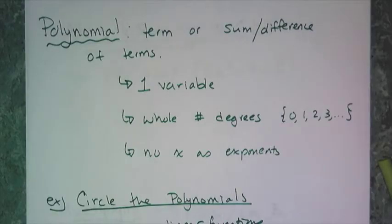Now this is the actual definition of a polynomial. It is a term, or the sum and differences of terms, specifically terms in a single variable, with whole number degrees, meaning only degrees 0, 1, 2, 3, 4, 5, 6 to infinity, no fractions, no negatives in the degree, just whole numbers, and no x's as exponents. So linear functions are a subset of the polynomial functions. Quadratics are a subset of the polynomial functions.